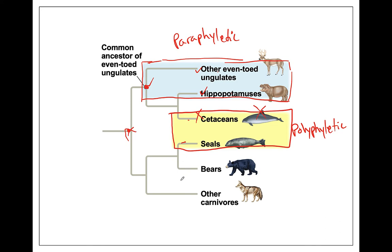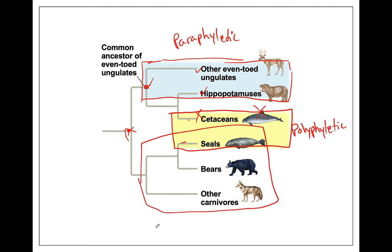If I want an actual monophyletic clade, I could include the seals, the bears, and the other carnivores. That would be monophyletic because I have the most recent common ancestor and then all of the descendants. This is the only grouping that gets a capital C Clade as a term.